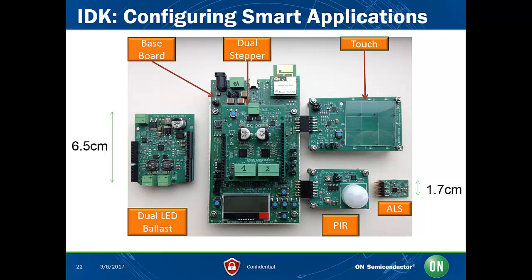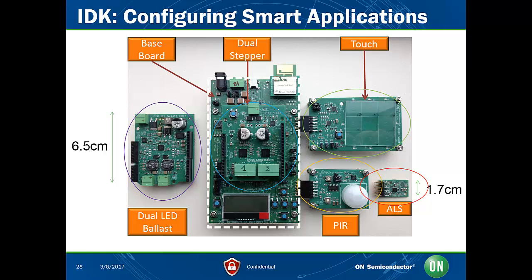Shown here is the basic configuration of the IoT development kit from On Semiconductor, where you have a selection of an ambient light sensor, a motion detection sensor, capacitive touch switch, plus a selection of actuators like the dual stepper motor controller, and two bright LEDs with different color temperatures. In addition, the kit also provides Sigfox connectivity to the sub-gigahertz range and Wi-Fi connectivity to allow connection to the cloud. There is also a baseboard which showcases an ARM SOC from On Semiconductor and all the power subsystems.